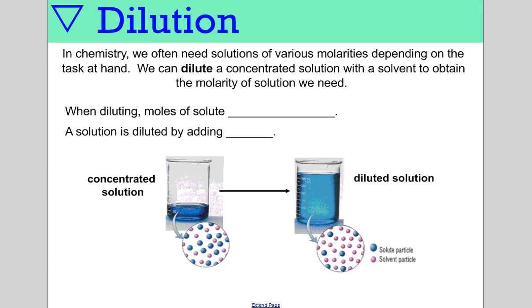The next thing we're going to talk about is dilution. In chemistry, we often need to dilute the things we work with. We change molarity in order to use something for a smaller scale or for a different application. We can dilute a concentrated solution with a solvent to obtain a molarity you desire. Key idea: when you're diluting something, the moles of solute don't change. The only factor you're changing in dilution is the volume.